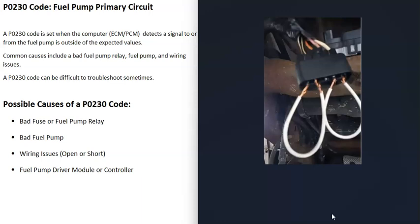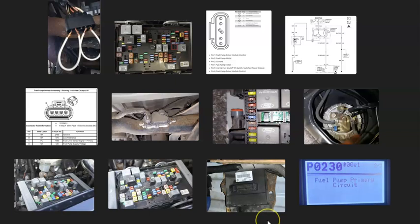That's basically it — just a basic overview of how you go about fixing a vehicle with a P0230 code. If you have anything to add, please comment below. If you have any questions, ask and I'll try to answer them. If this video helps you, please click like, click subscribe, and have a good day.